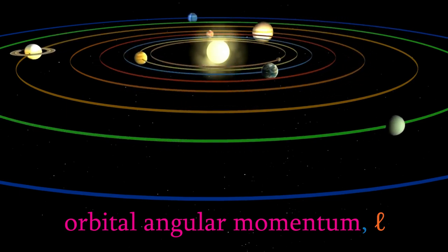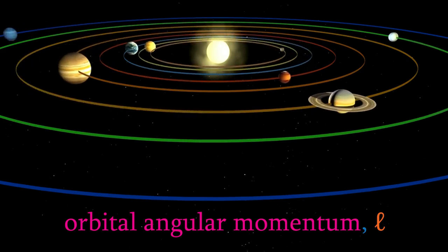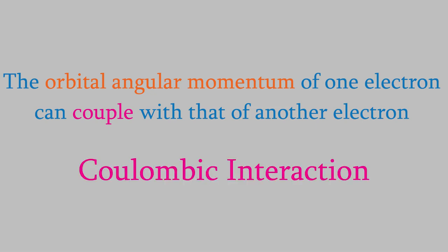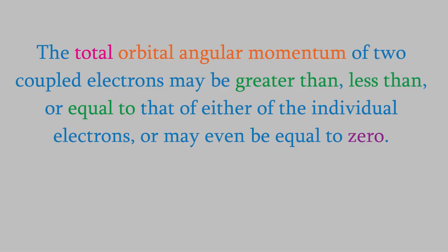Because of these different types of momentum, several different kinds of interaction can occur between different electrons. For example, the orbital angular momentum of one electron can be coupled to the orbital angular momentum of another electron. This is known as a Coulombic interaction. When we say that the momenta are coupled, what we mean is that the momenta of the two electrons can interfere with each other — this is another demonstration that electrons actually behave like waves, since the momenta of solid, non-wavelike particles would not couple in this way. As a result of this interference, the overall orbital momentum may be greater than, less than, or even zero compared to the individual momenta.